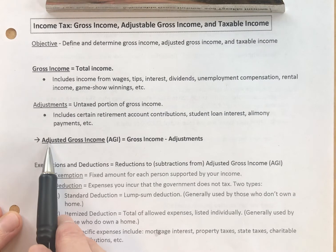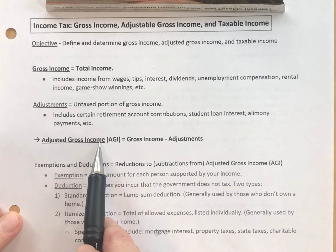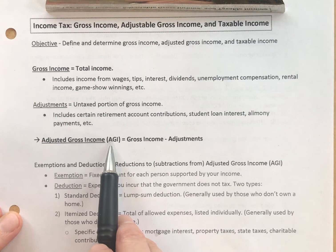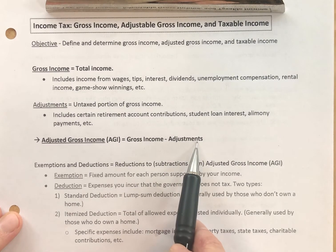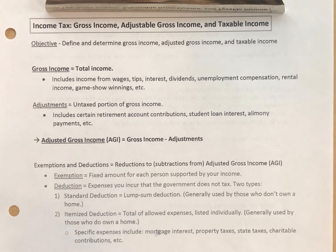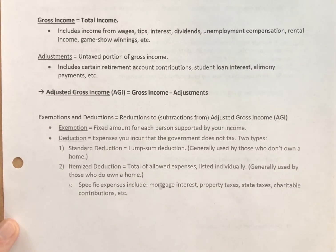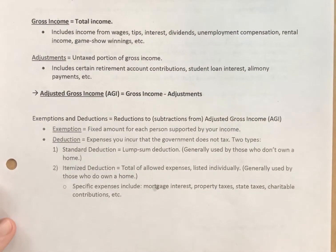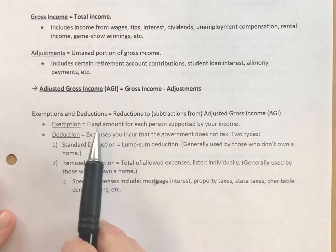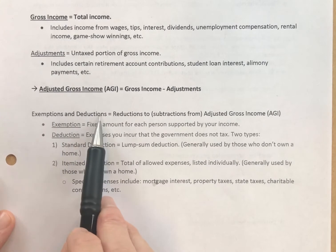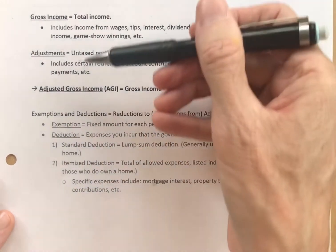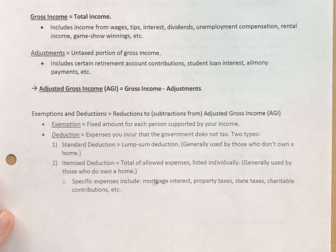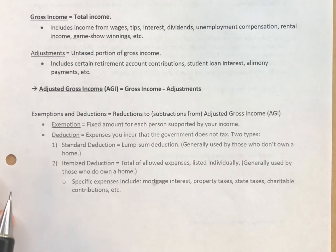So your adjusted gross income — also called the AGI — is your gross income minus your adjustments. From there, you can further subtract exemptions and deductions. Adjustments, exemptions, and deductions are all things you can subtract from your income to lessen your taxable income.